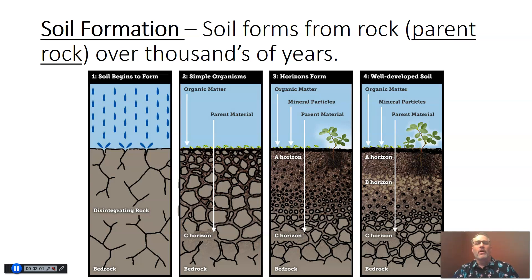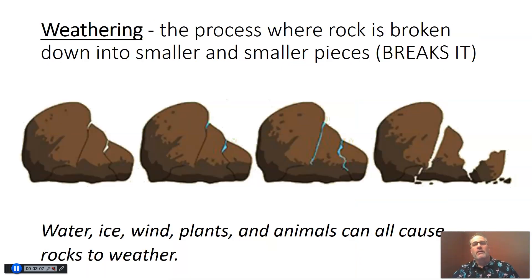This is a process some of you have undoubtedly learned about, probably in fourth grade. This is a process called weathering. Weathering is just a natural process that breaks rock down into smaller and smaller pieces. There are several ways — it's not just water that breaks down rock. We can also have ice break it down, wind, plants and animals. All of these are what we call weathering agents, which means they're all things that can break rock into smaller pieces and cause weathering.